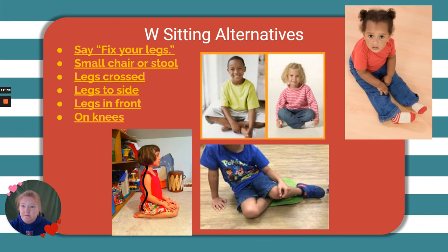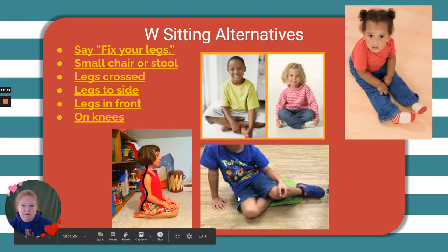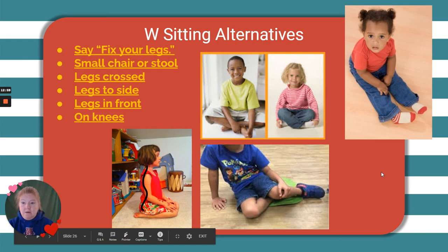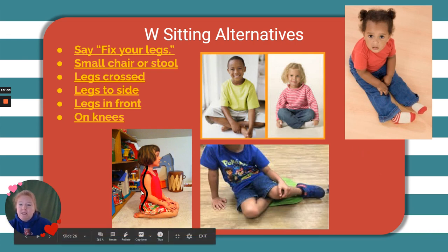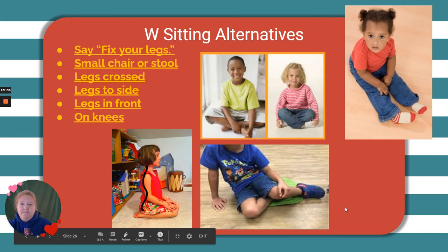So what are some alternatives to W-sitting? You could simply say 'fix your legs.' You could use a small chair or stool. You could sit with legs crossed — crisscross applesauce. You could put your legs to the side, both legs turned to one side. You could have your legs straight out in front. You could sit on your knees — either completely kneeling or sitting back on your heels.